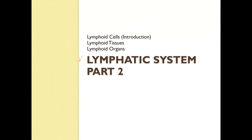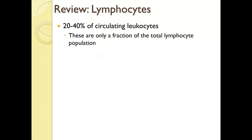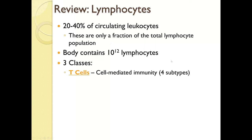Now let's review lymphocytes. Lymphocytes make up 20–40% of circulating leukocytes, but that is only a fraction of the total lymphocyte population — you have about 10 to the 12th lymphocytes, and most reside in lymphatic tissues and organs rather than circulating in the bloodstream. There are three classes of lymphocytes. T cells are responsible for cell-mediated immunity, with four subtypes we'll cover later. The T in T cells stands for thymus-dependent, because these cells must go to the thymus to complete their development.